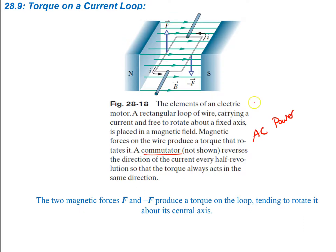This is very similar to AC power. In the previous lab we did DC, which is direct current, while AC is alternating current. If you spin a coil through a magnetic field, you can even induce an alternating current — but we'll get to that later. The two magnetic forces, F and negative F, produce a torque on the loop, tending to rotate it about its central axis.